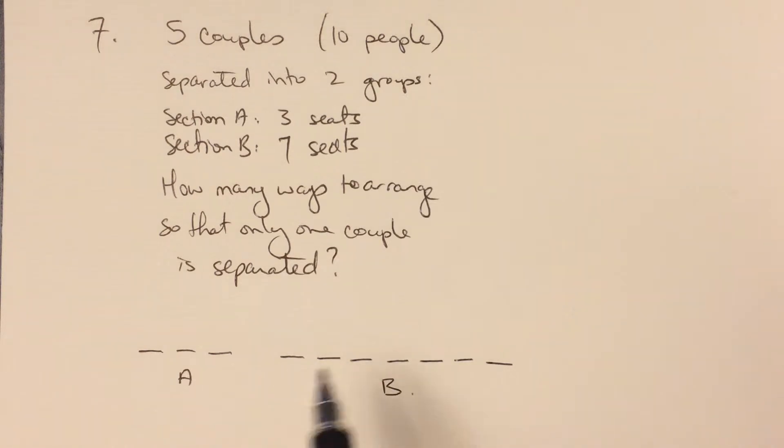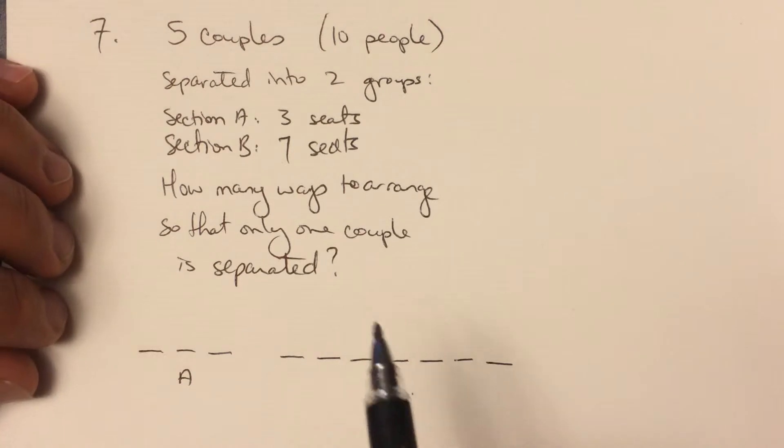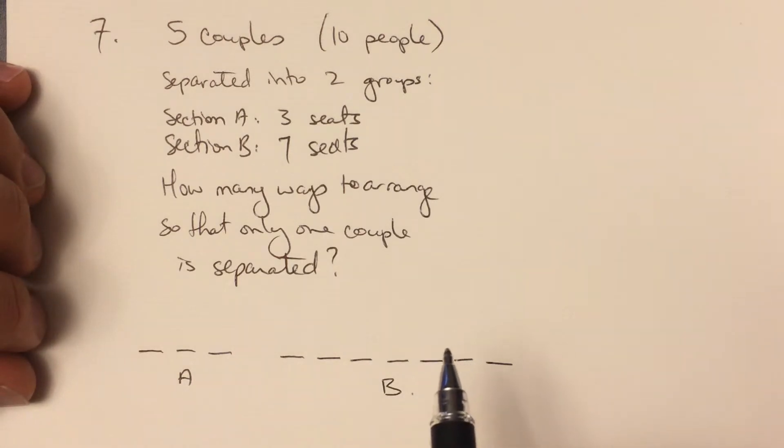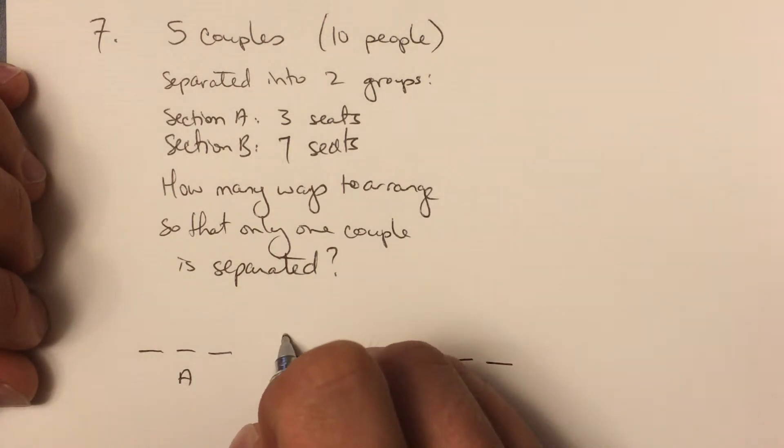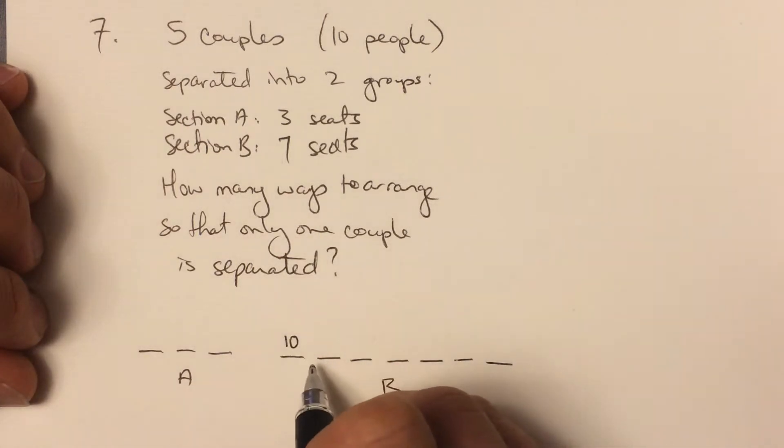So what we're going to do is count the number of ways to fill the seats, and then we're going to realize that there are some extra places that we could put the split couple, the couple that can't sit together, and that's going to give us many extra permutations. Let's start putting people in seats. There are 10 people available to sit in this seat, but as soon as I put a person there, I want couples to sit together, there's only one person to sit in the adjacent seat.